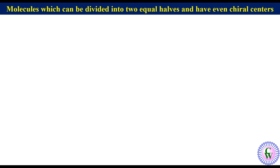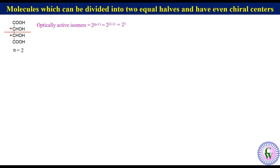Now, molecules which can be divided into two equal halves and have an even number of chiral centers. The first example is tartaric acid. It has two chiral centers, so n is equal to 2. This is the plane of symmetry which divides it into two equal halves. The number of optically active isomers will be equal to 2 raised to the power n minus 1, which equals 2 raised to the power 1, which equals 2. The number of meso compounds will be equal to 2 raised to the power (n/2) minus 1, which equals 2 raised to the power 0, which equals 1.